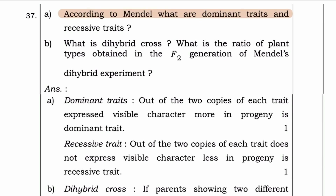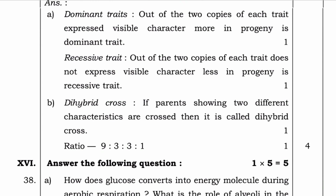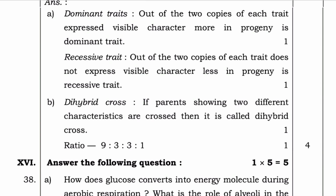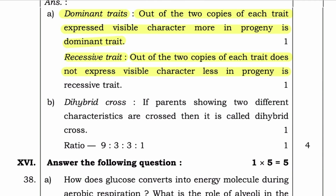According to Mendel, what are the dominant traits and recessive traits? Answer — Dominant traits: out of the two copies of each trait, the expressed, visible character that appears more in progeny is the dominant trait. Recessive trait: out of the two copies of each trait, the character that does not express visible features as much in progeny is the recessive trait.